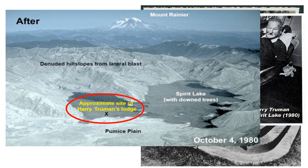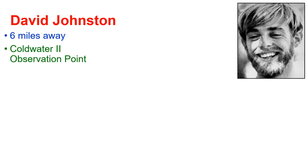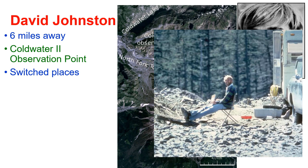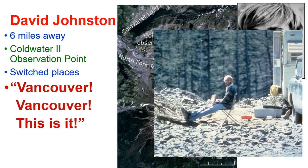Here's a picture and right here is the approximate site of Harry Truman's Lodge. Dr. David Johnston — he was the volcanologist, six miles away from the volcano at the Coldwater II observation point. There's the observation point and here is Mount St. Helens. At that time he had just switched places with Harry Glicken for the morning shift. This is the last picture taken of David Johnston. He was the one that yelled into his microphone, 'Vancouver, Vancouver, this is it,' as the eruption began.